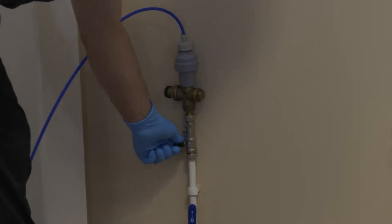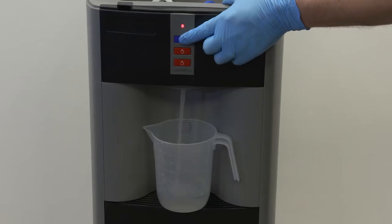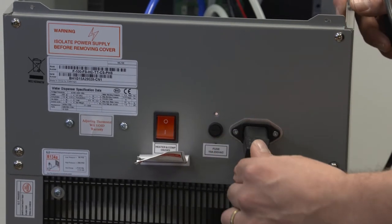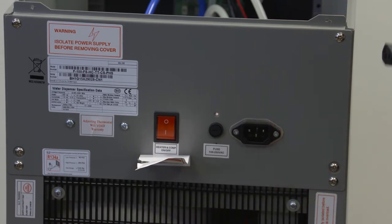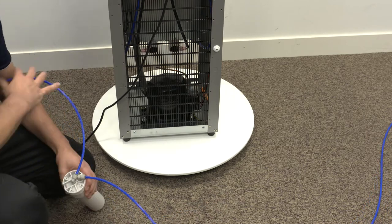Turn the water supply off again. To release any pressure that may have built up, press and hold the cold water button until the water stops flowing from the faucet. Turn off the power and unplug the machine. Disconnect the one quarter inch cold water feed from the rear bulkhead of the machine.